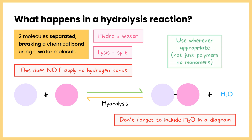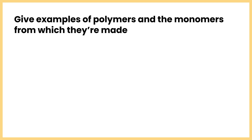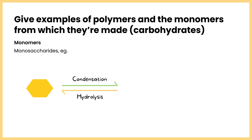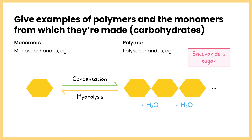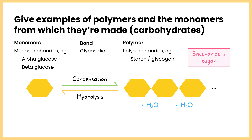The monomers of carbohydrates are called monosaccharides, and when many of these join together they form polysaccharides. Saccharide basically just means sugar, so monosaccharide means single sugar unit and polysaccharide means many sugar units joined together. The bonds that form between monosaccharides are called glycosidic bonds. The main examples of monosaccharides are glucose, with two isomers: alpha glucose and beta glucose. Alpha glucose molecules are the monomers of the polymers starch and glycogen, and beta glucose molecules are the monomers of cellulose.